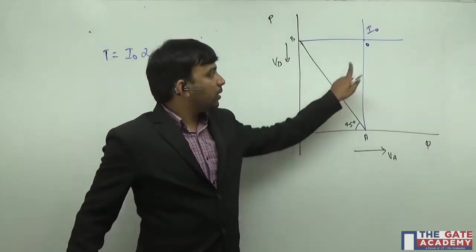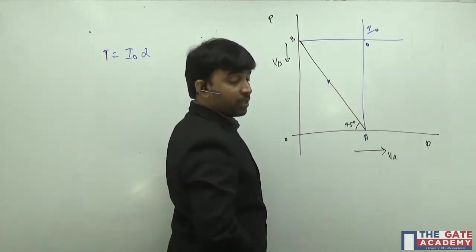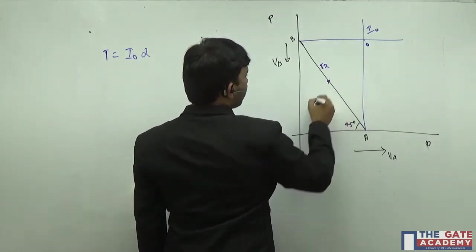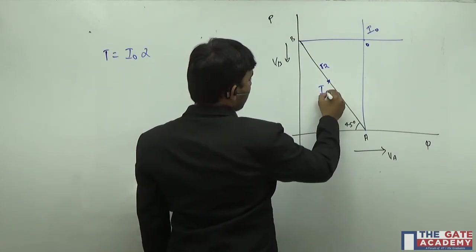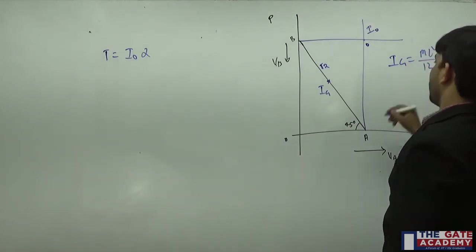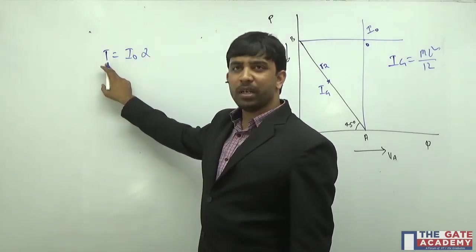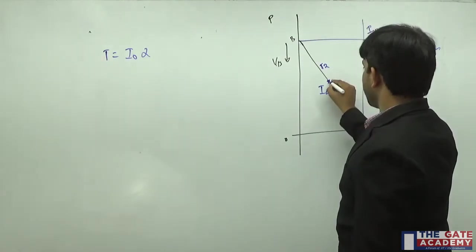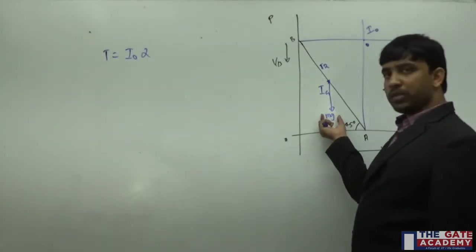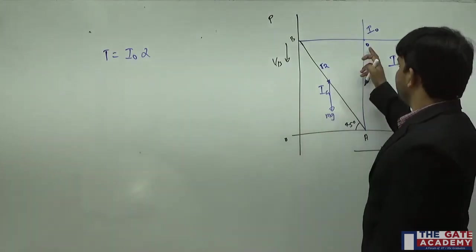I₀ is the moment of inertia of the rod about this particular point. He gave the moment of inertia of the rod about its center of mass: Ig = mL²/12. The length of the rod is given as root 2. The torque acting on the rod is I₀ times alpha, and this torque is produced due to mg. The weight of the rod acts vertically downward from the center of mass, producing an unbalanced couple that causes the rod to rotate about the instantaneous center.